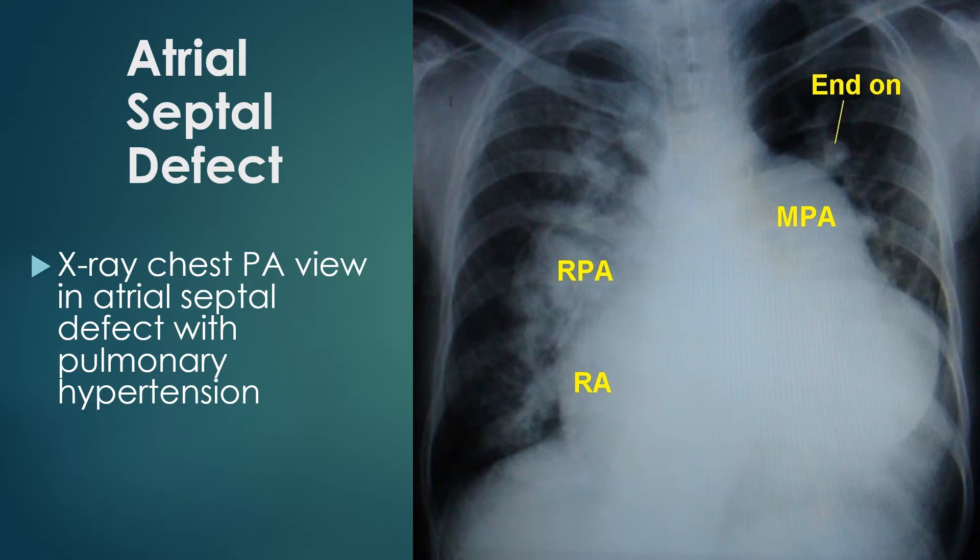The apex is upwards, suggesting a right ventricular configuration. All features suggest a large secundum atrial septal defect with a large left-to-right shunt producing severe pulmonary hypertension.